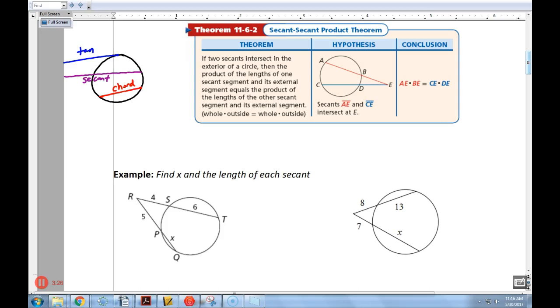So the secant-secant product theorem basically says, it's kind of similar, but it's not piece times piece. It's basically the whole secant times the outside portion equals the whole secant times the outside portion of the other one. So let's kind of take this one into play here. So on the first one, the whole secant, so let's go all the way from R to T. So I do R to T times the outside piece, which would just be RS. RS, that's got to be equal to this whole piece here, RQ, times the outside piece, which is RP. So whole times outside, whole times outside.